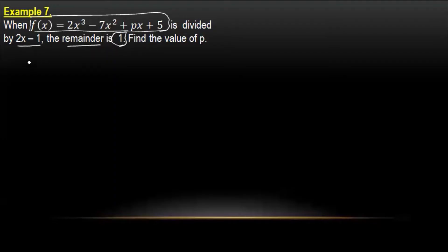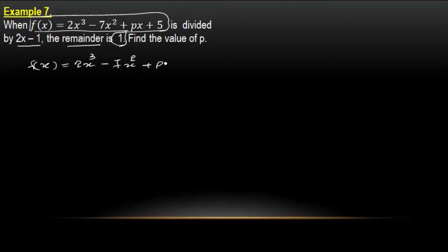We multiply our values as well and 4x is equal to 2x³ minus 7x² plus px plus 5. This is divided by 2x minus 1, giving 1 by 2.